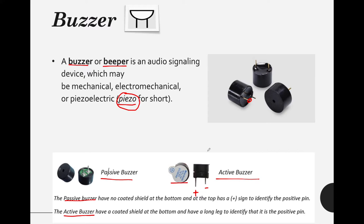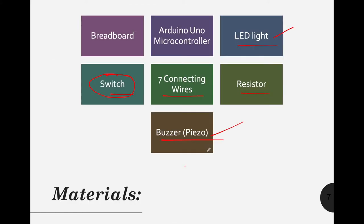So let's create a circuit that works with a switch and buzzer. We will have these materials: a breadboard, Arduino Uno microcontroller, an LED light, a switch, seven connecting wires, a resistor, and a buzzer. Basically, if the user presses the switch, it will switch on the LED light, and it will also make a sound or make a tone in our piezo or buzzer.